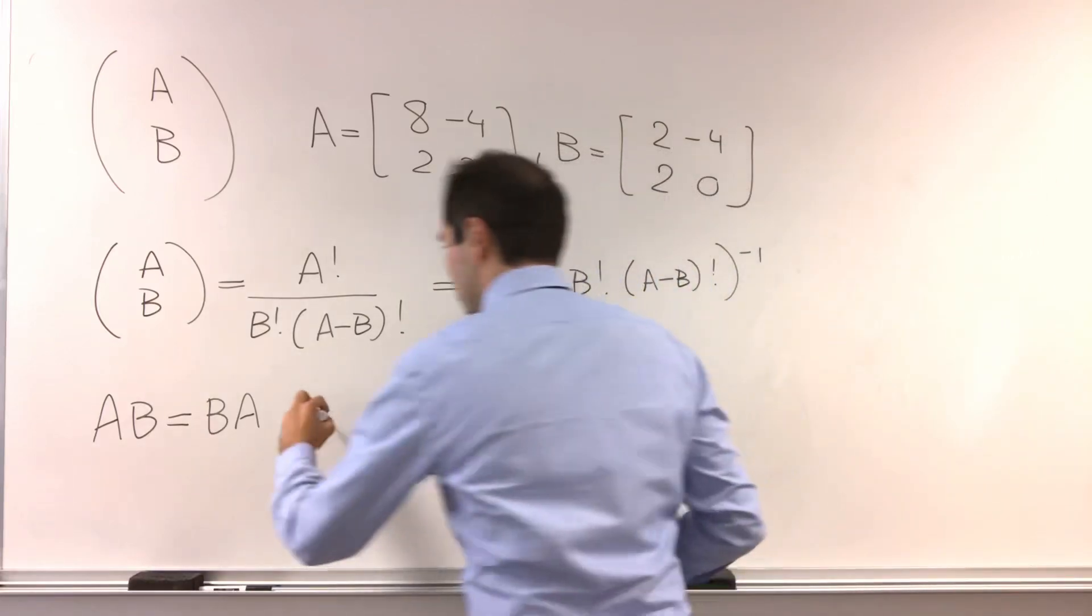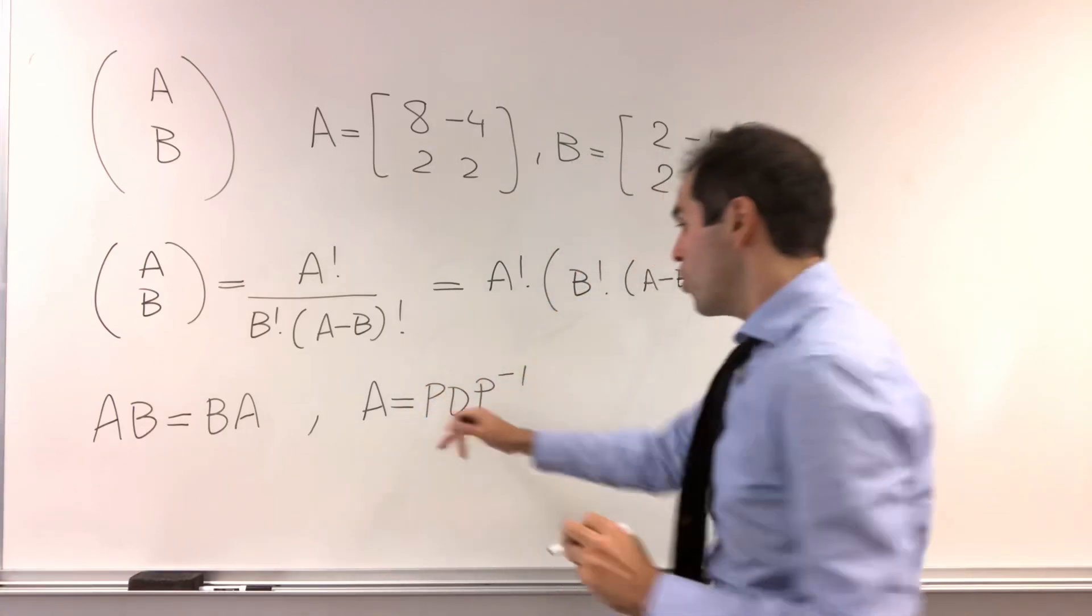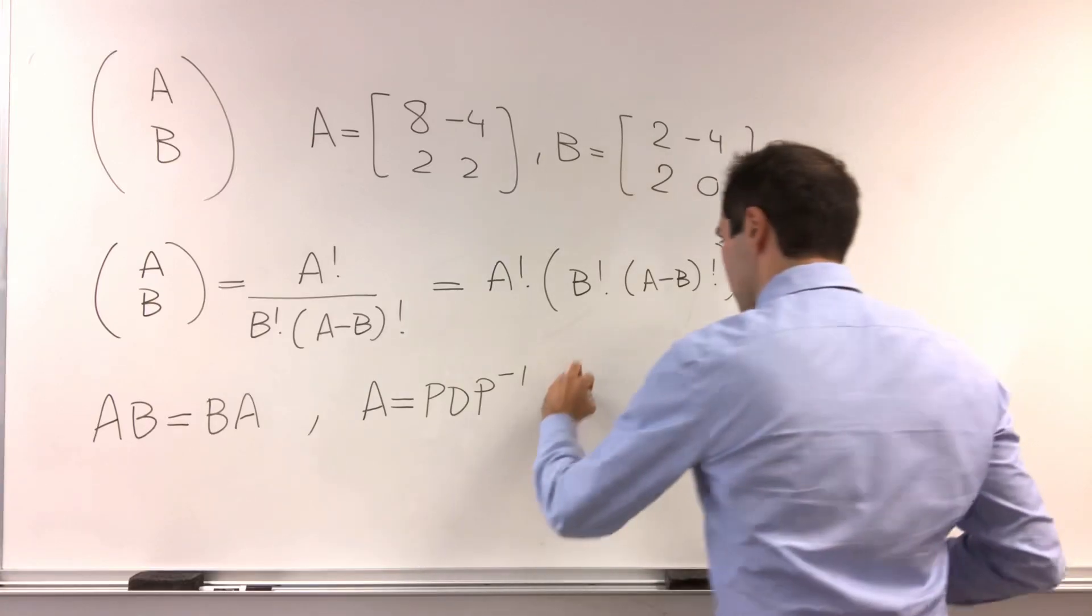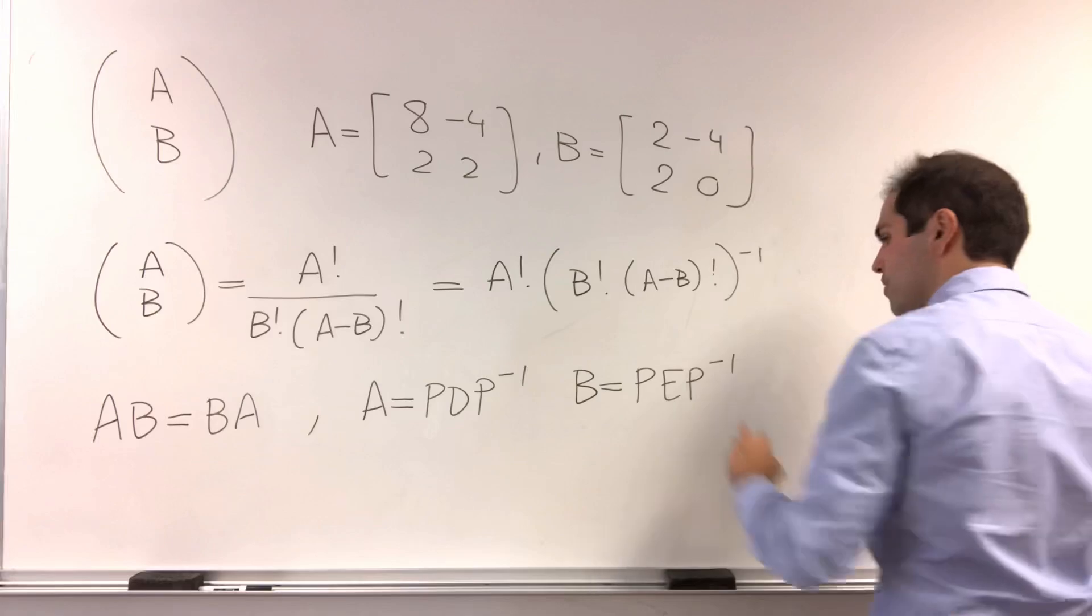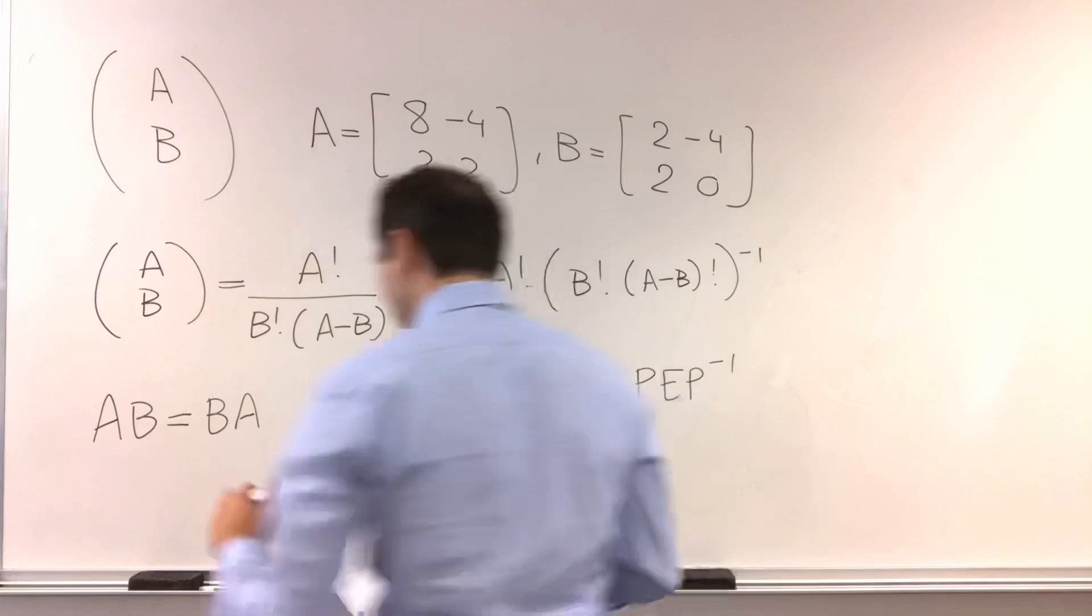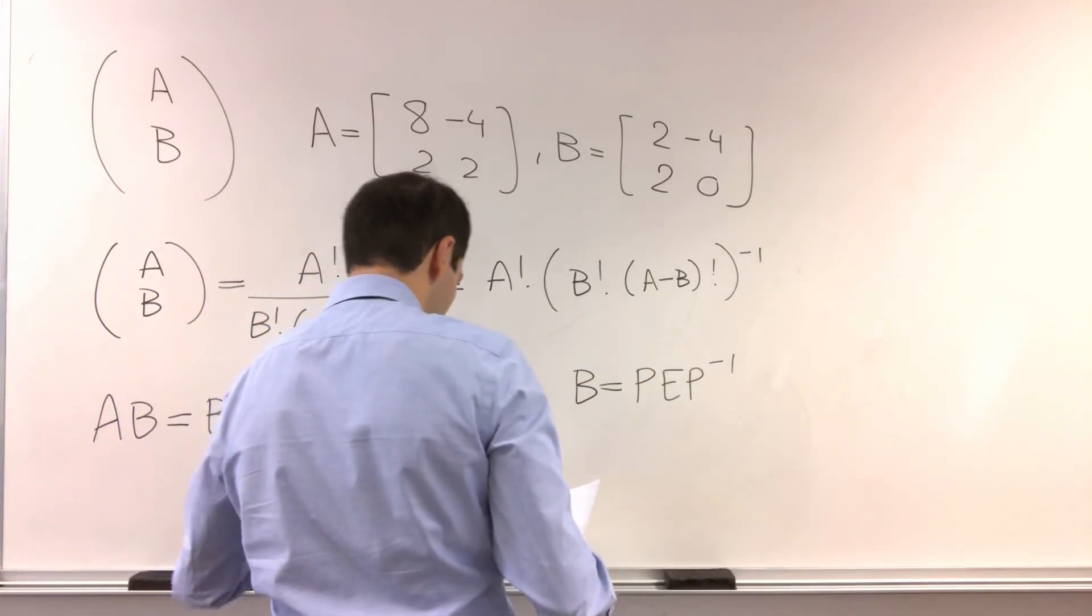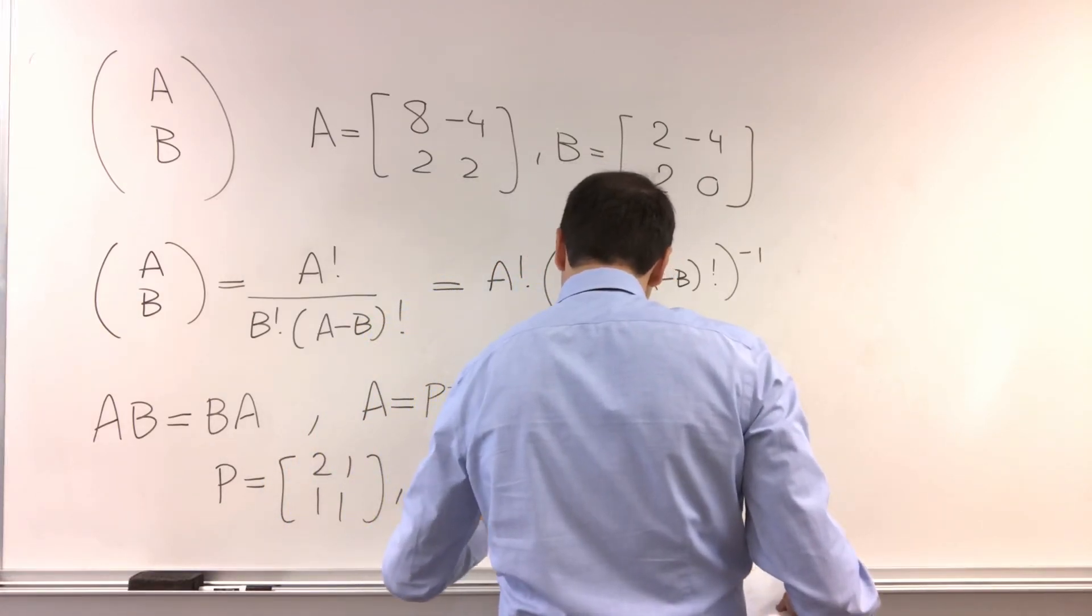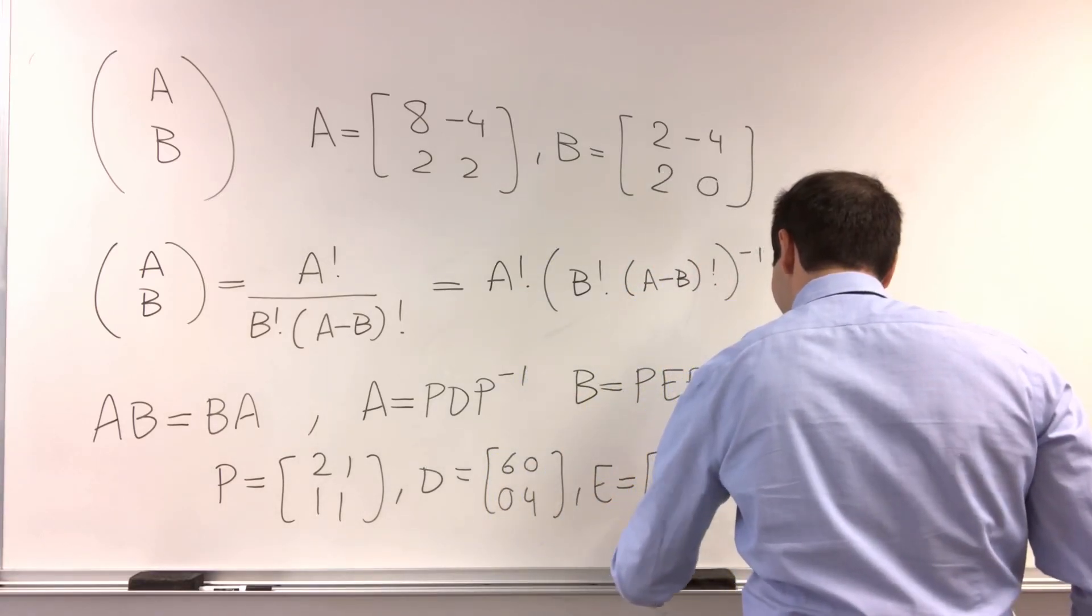In other words, sure, we have a is p, d, p inverse. But it turns out the same p can also diagonalize b. So in other words, b is p, e, p inverse. Where, again, I calculated p, d, and e to be the following. p is 2, 1, 1, 1, d is 6, 0, 0, 4, and e is 4, 0, 0, 2.